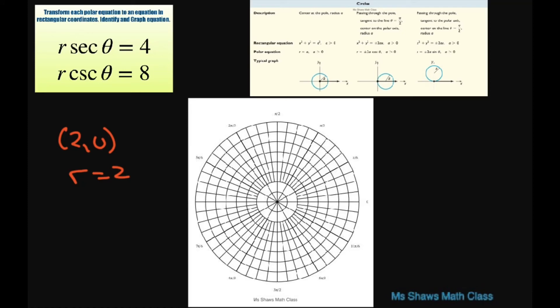So for the first one we had center is 2 comma 0 and radius equals 2. This was the cosine one, which is this one. I know this is hard to see, but this is on my Facebook page if you want to save this for reference.